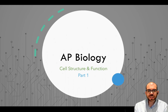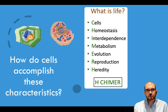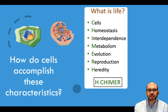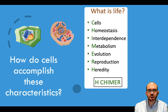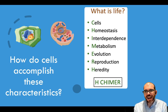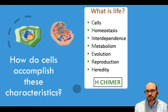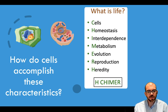This lecture is an introduction into cellular structure and function and it is the first of two parts. In our endeavor to understand what is life, we've discussed how life is made of cells, that it maintains homeostasis, it's interdependent, has a metabolism, it evolves, reproduces, and has heredity. Our new focus now is how does a cell accomplish all of these—how is one individual cell able to maintain homeostasis, have a metabolism, and evolve?